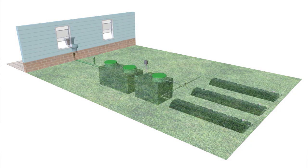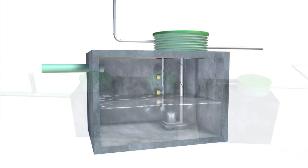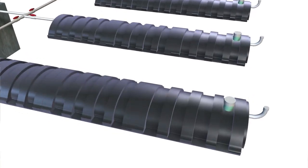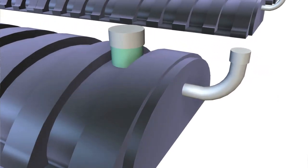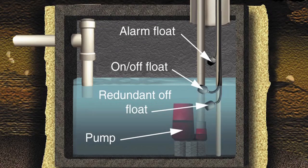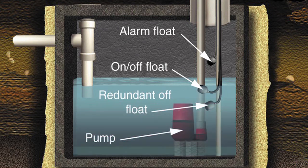Pressurized systems start with a septic tank just like a gravity system. After the septic tank, the wastewater flows into a pump tank and is pumped to the drain field, where it's spread equally throughout the drain field lines. The pump tank accepts wastewater from the septic tank through an inlet baffle. The pump itself is located on the floor of the tank. There are two floats used to control the pump: the on/off float and the redundant off float. If the wastewater level were to drop below the pump, the pump could overheat and burn up.